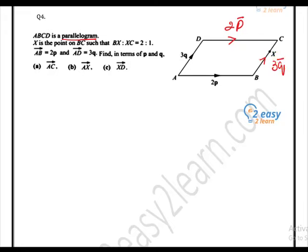Now let's see other information. X is the point on BC such that BX ratio XC is 2 to 1. So BX is 2 and it is equal to 1. This is very important information. 2 plus 1 is equal to 3 and this is 3Q. This means it is 2Q and it is 1Q. So we have this ratio with BX or XC to identify.